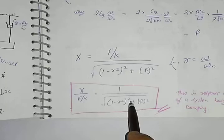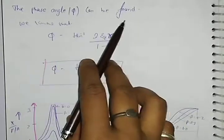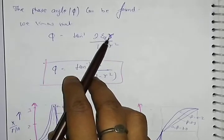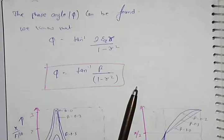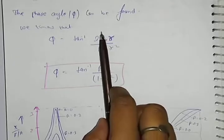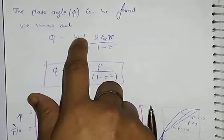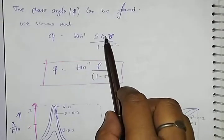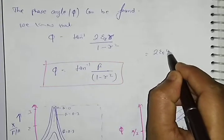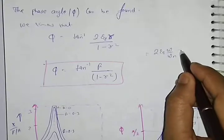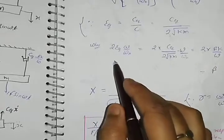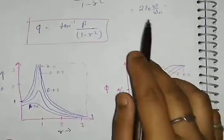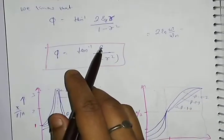The phase angle can be found from: φ = tan⁻¹(2η_equivalent·r / (1 − r²)). Since we convert structural damping to equivalent viscous, and 2η_equivalent corresponds to β, this becomes: φ = tan⁻¹(β / (1 − r²)). This is the phase angle for the structural damping system.